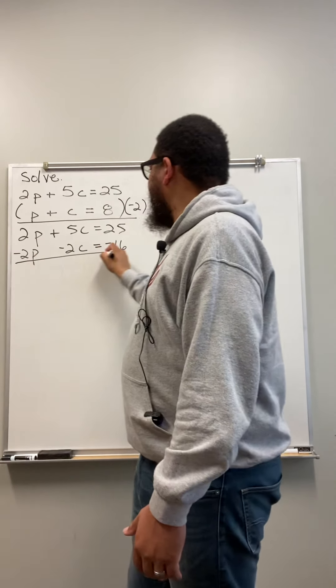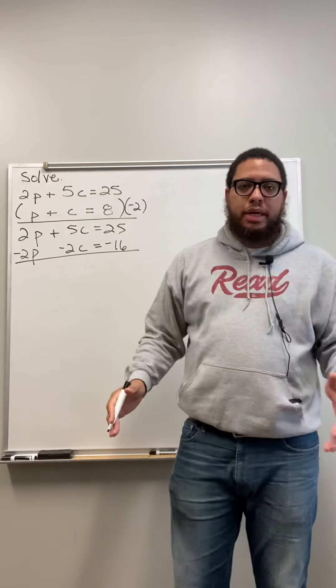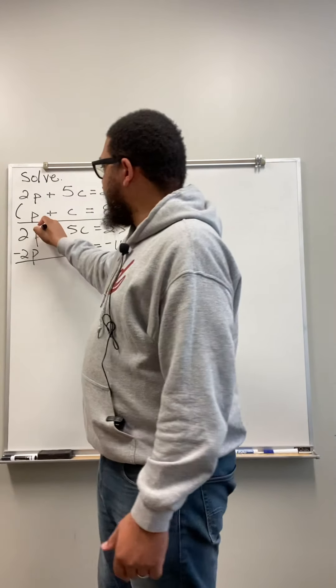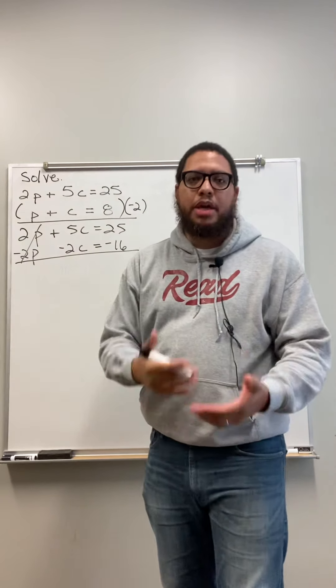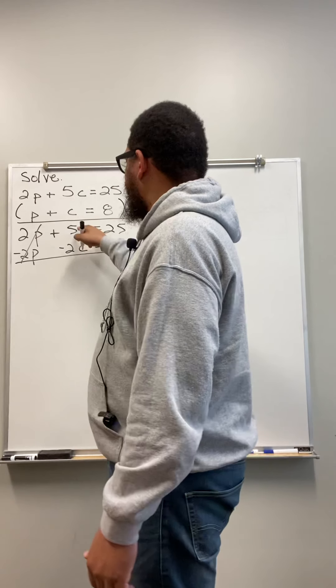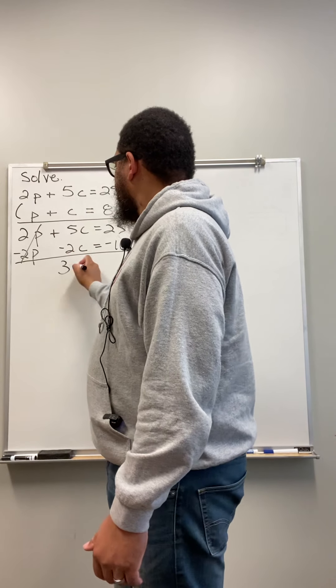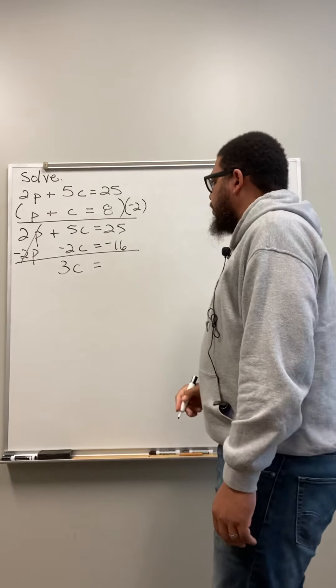Now I'm going to do my addition. When I do my addition, now the P's are going to get eliminated. Because look, 2P minus 2P. And that's the same thing as 2P plus negative 2P. Now I got 5C minus 2C. That's 3C. Then I bring my equal sign down. Then I got 25 minus 16. 25 take away 16. That's 9.